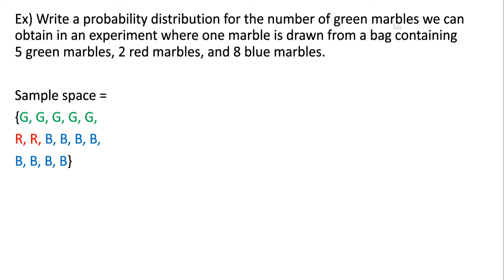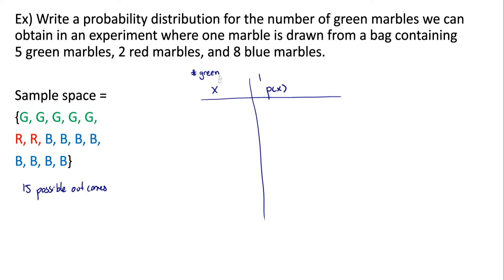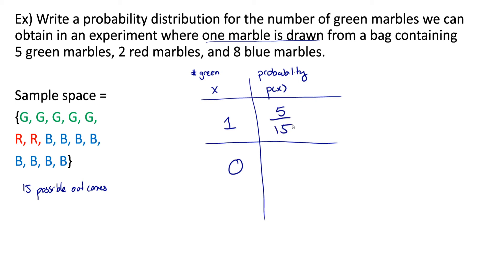Write a probability distribution for the number of green marbles we can obtain in an experiment where one marble is drawn from a bag containing five green marbles, two red marbles, and eight blue marbles. Our sample space has 15 possible outcomes. Since we're drawing one marble, we can either get one green marble or zero green marbles. There are five green out of 15, so the probability of getting one green is five out of 15. The probability of not getting a green — getting a red or blue — is 10 out of 15.